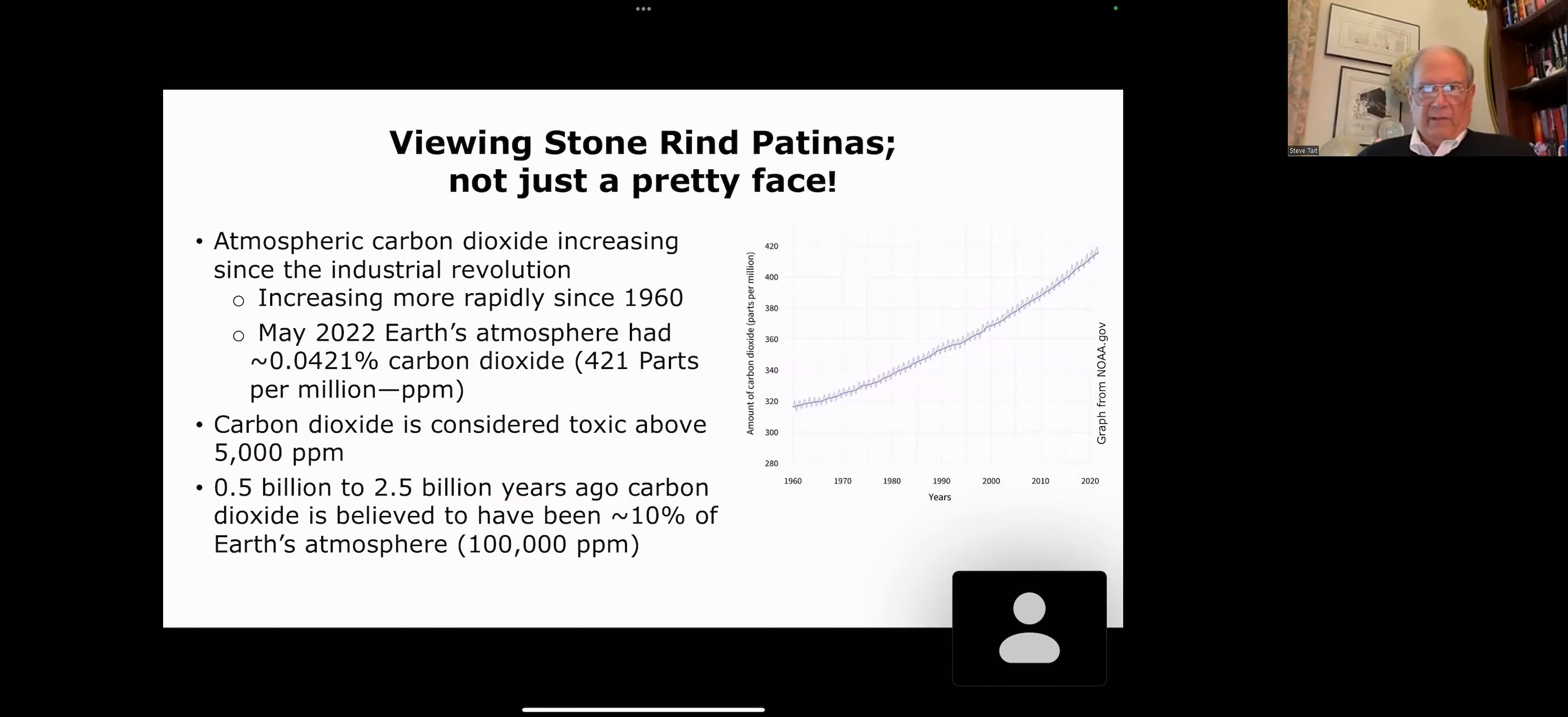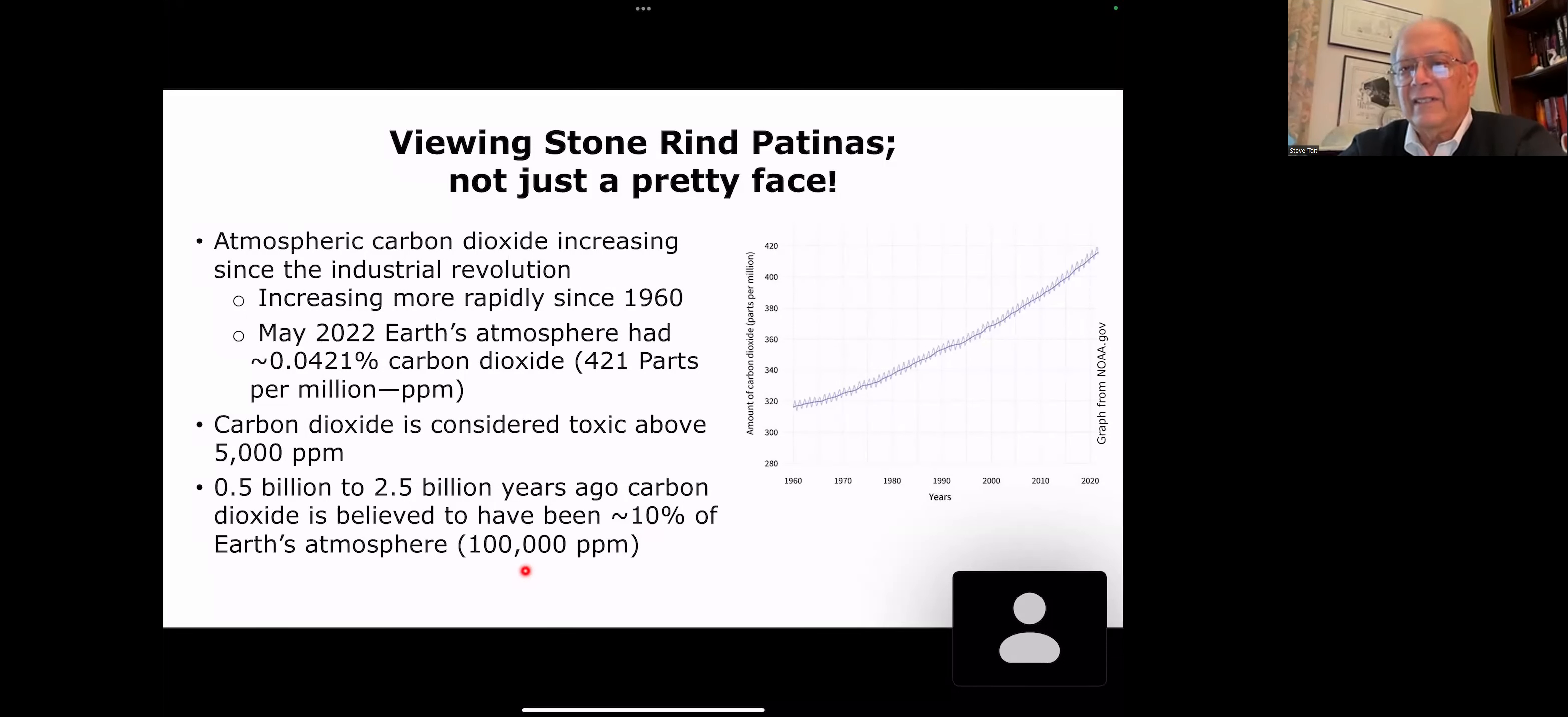Well, viewing stone rind patinas are not just a pretty face. We all know that atmospheric carbon dioxide is increasing since the industrial revolution. Indeed, it's increasing, has been increasing exponentially since 1960. Indeed, in May of this year, there was 0.0421% carbon dioxide in our atmosphere, which is about 421 parts per million. Carbon dioxide is considered toxic at around 5,000 parts per million.